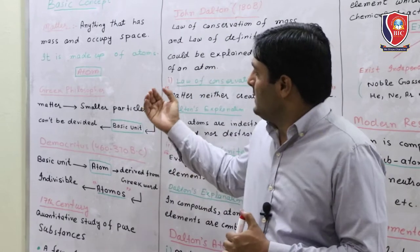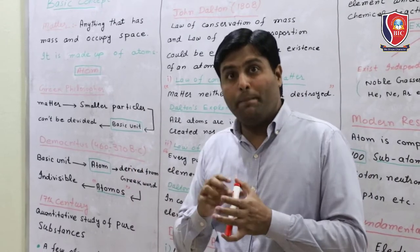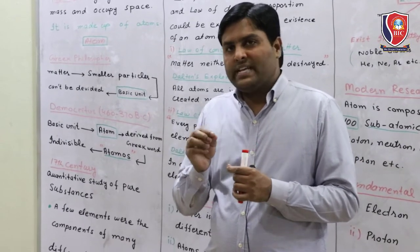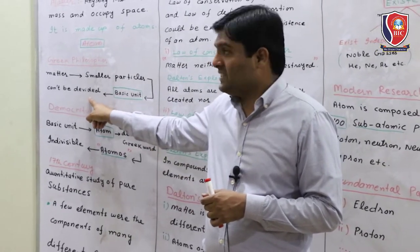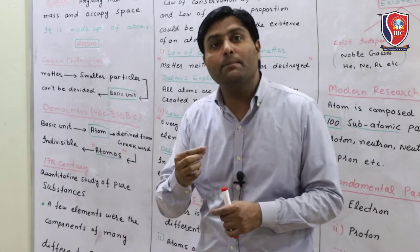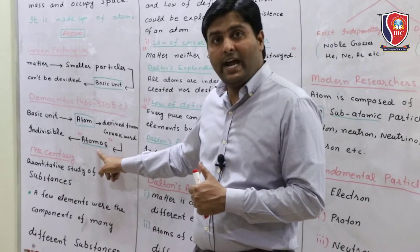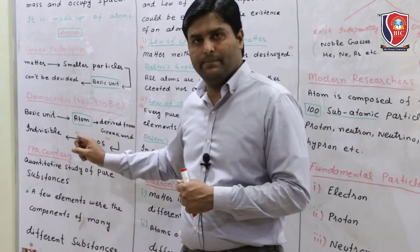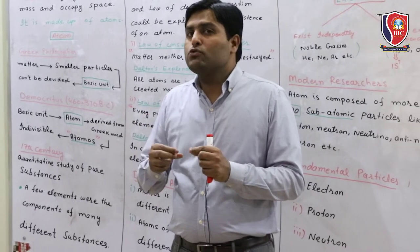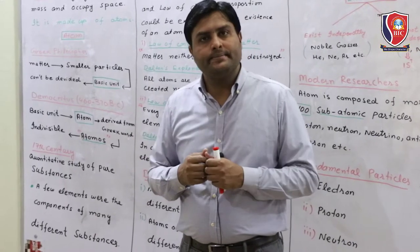Then we have Democritus, in 462–370 BC. The Greek philosophers said that if we keep breaking matter, we will reach a basic unit which we can't subdivide further. Democritus named this basic unit 'atom.' The word atom is derived from the Greek word 'atomos,' which means indivisible. So in the Greek language, they gave this basic unit the name of atom.